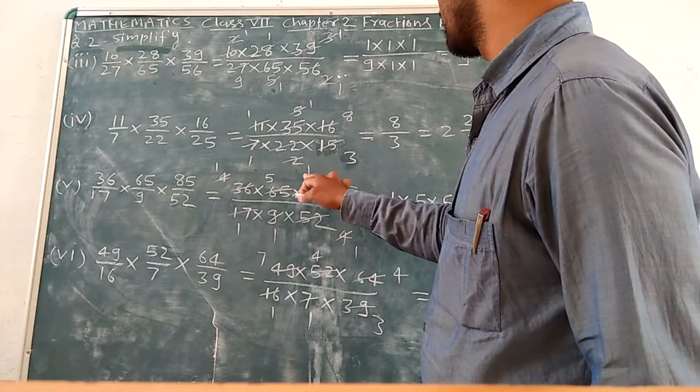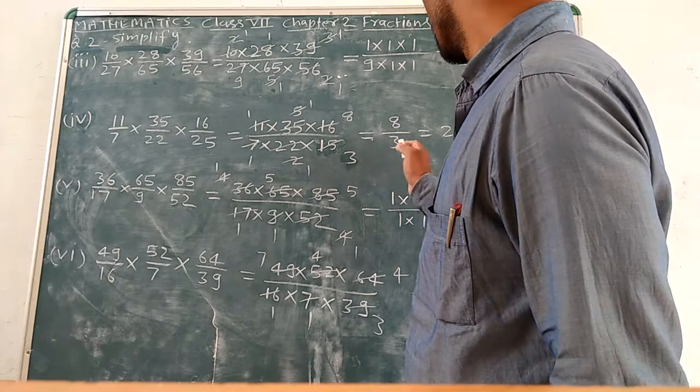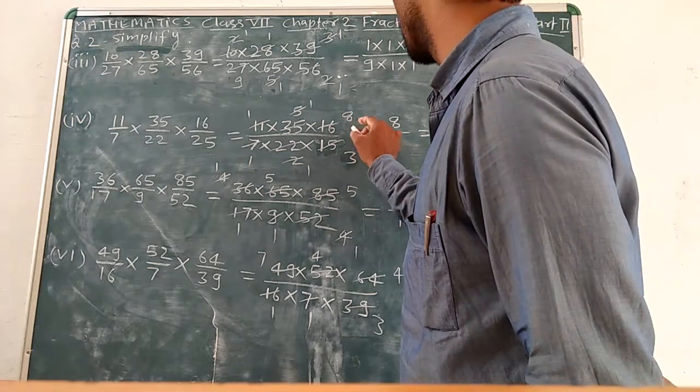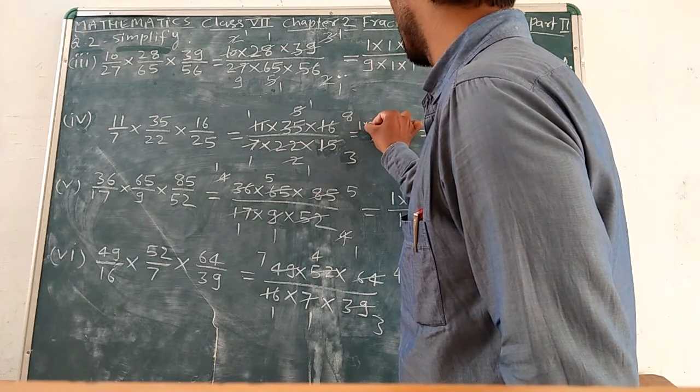The numerator 1 multiply 1 multiply 3. 1 multiply 5, 1 multiply 4.